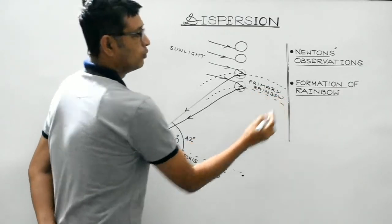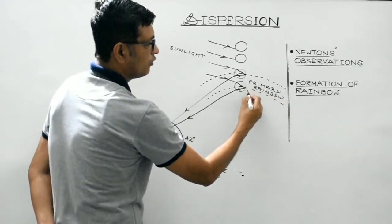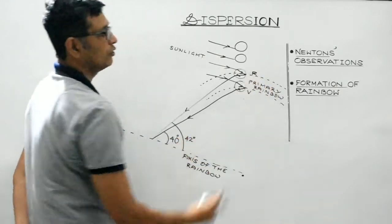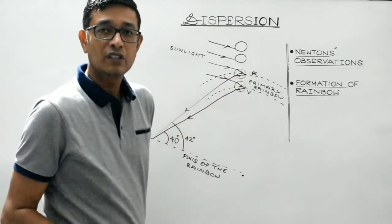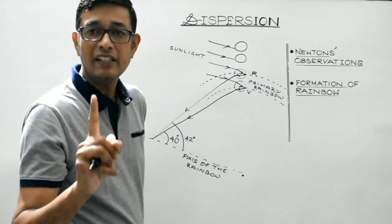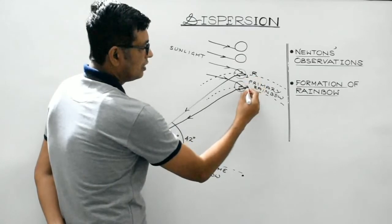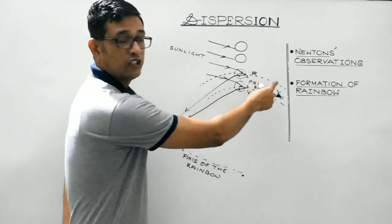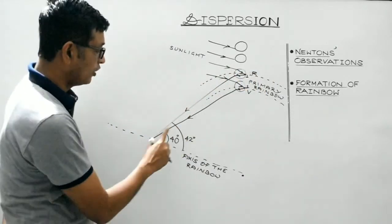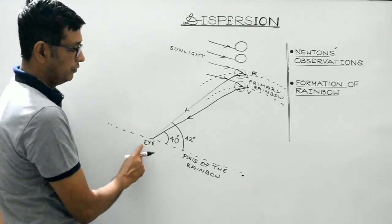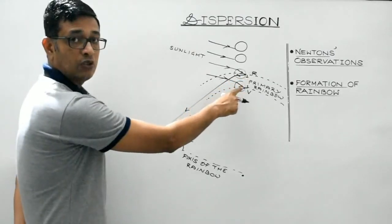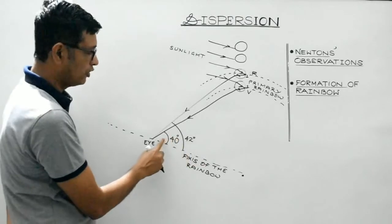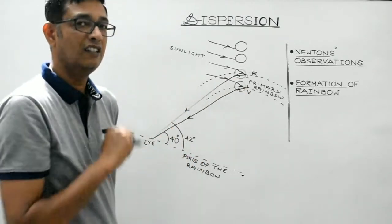In the case of a primary rainbow, the inner arc is of violet colour while the outer band is of red colour. Primary rainbow is formed due to one total internal reflection inside the water droplet. The sequence of colours has violet on the inner edge and red on the outer edge. To see the primary rainbow, the angle which the light entering the observer's eye makes with the axis of the rainbow is 41 degrees — average of 40 and 42 degrees.